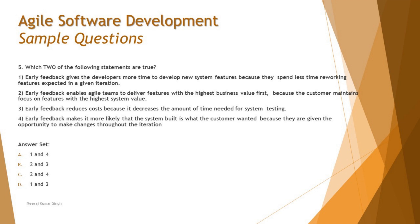We have four statements here. Statement one: 'early feedback gives the developers more time to develop new system features because they spend less time reworking on features expected in a given iteration.' Early feedback means consistently getting feedback from customers by collaborating with business representatives and presenting demos of work items prepared in each sprint.